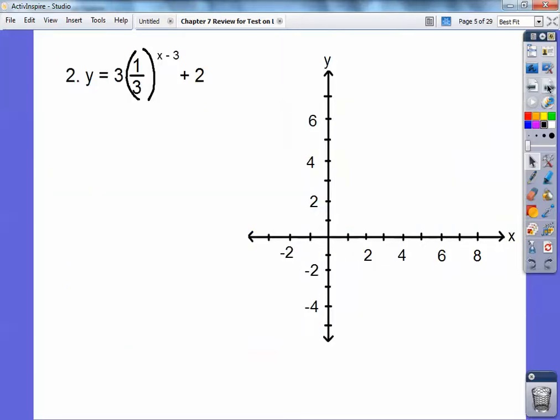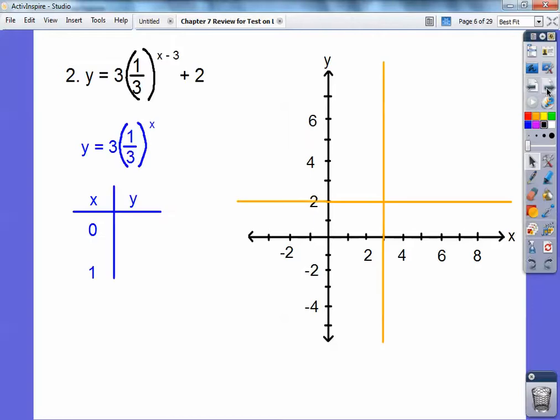Here's another one: 3 times 1 third to the x minus 3 power plus 2. I'm going to shift this to the right 3, up 2, and then I'm going to graph just y equals 3 times 1 third to the x, and do my 0, 1 thing. When x equals 0, 1 third to the 0 is 1, so I get 3. When x equals 1, I get 1 third. 3 times 1 third is 1. So I'm going to go 0, 3, put a point right there, and then over 1, up 1 from right there, and that's going to give me two points right there. There's my graph, and there's my domain and range.